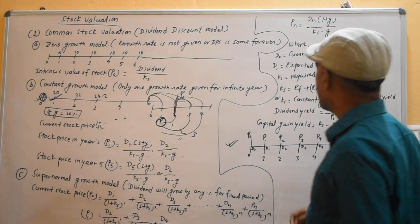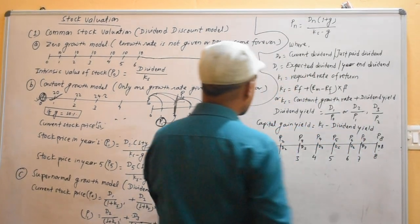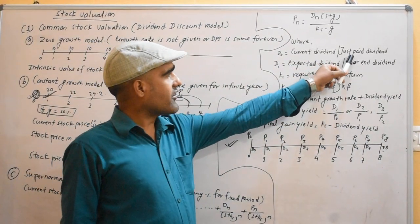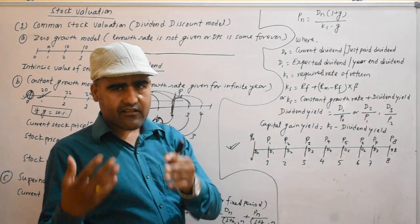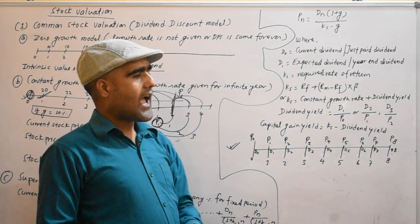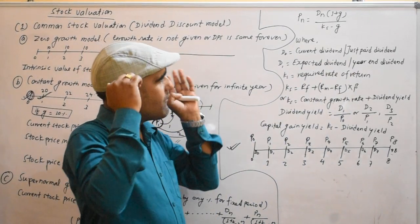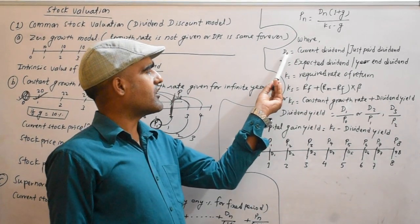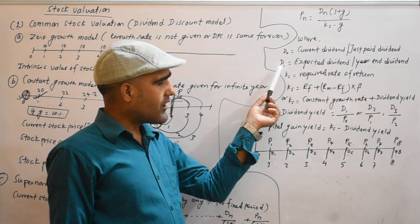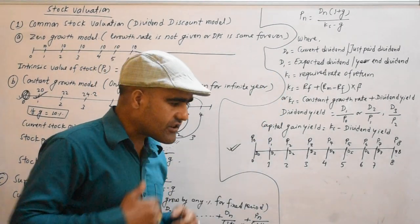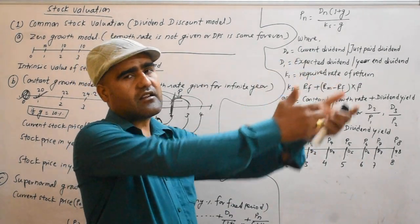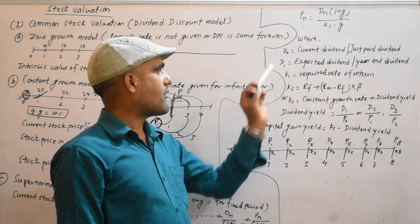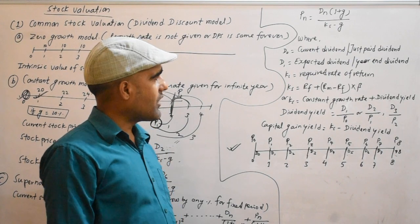D0 is the current dividend, based on dollar amount, the current due date, eroded during payment. D1 is the expected dividend in year one, which means D1.